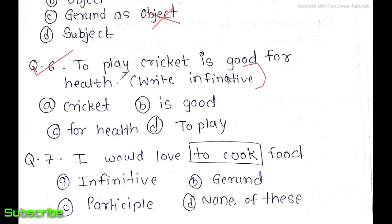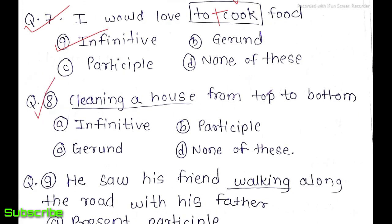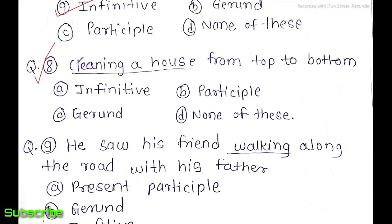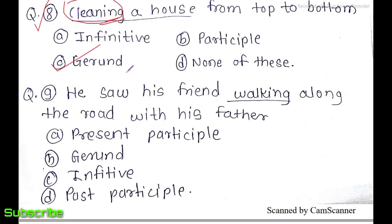Question 6: 'To play cricket is good for health' — the infinitive is 'to play' because 'to' is followed by a verb form. The correct option is infinitive. Question 7: 'I would love to cook food' — the correct answer is infinitive because the to plus verb form 'to cook' is present. Question 8: 'Cleaning the house from top to bottom' — this ends in -ing and works as a noun at the start of the sentence, so the correct answer is gerund.